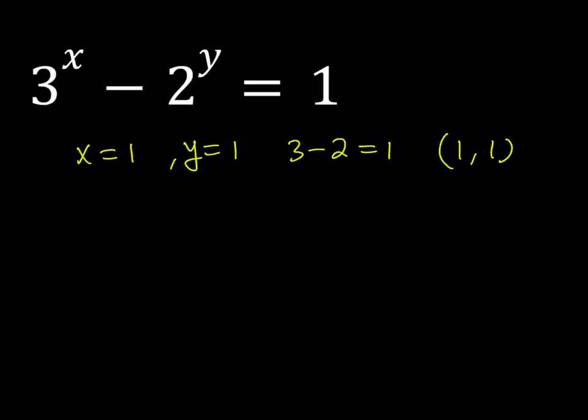And then there's another solution. If you think about it, powers of 3 and powers of 2, we have 9 minus 8, which is also 1. So that means if x equals 2 and y equals 3, we get 9 minus 8 equals 1, which means (2,3) is another solution.